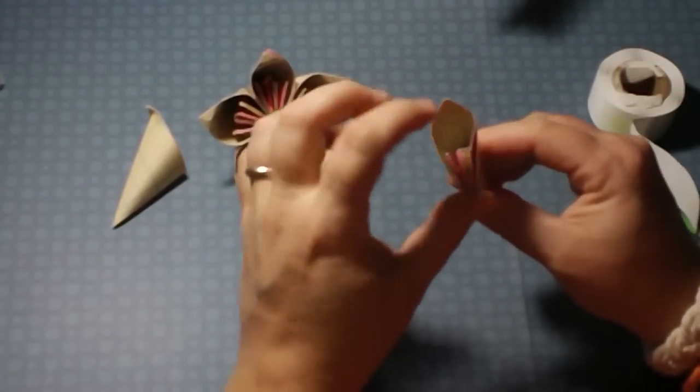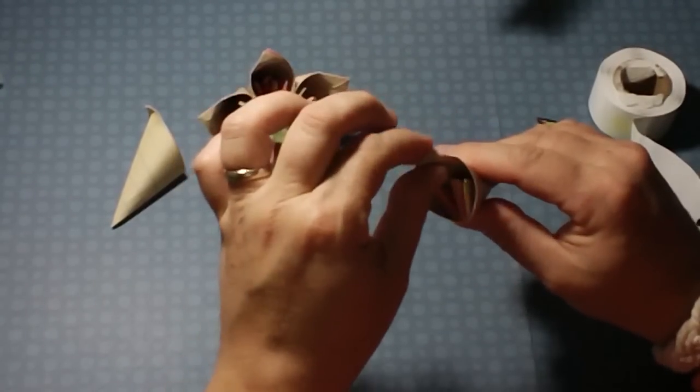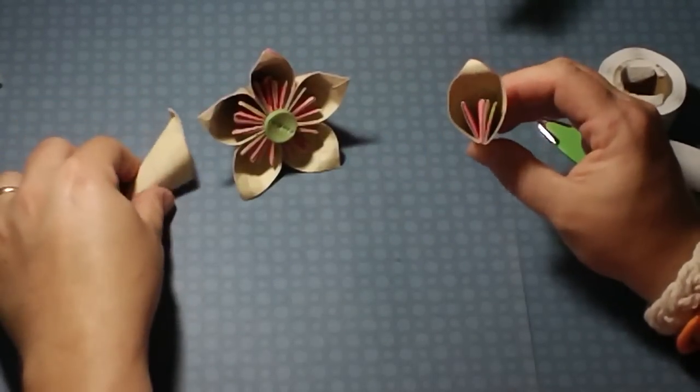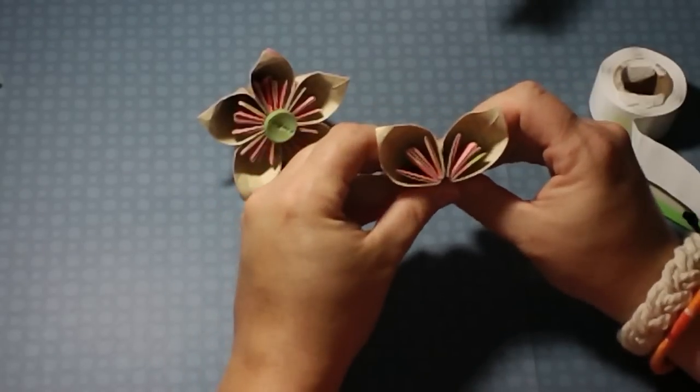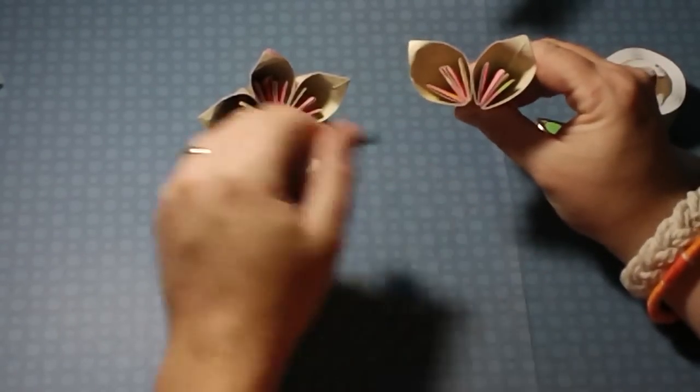Then I fluff it back out so it's nice and round, and I like to curl this petal up a little bit. So now we have two of them here and we're going to put those together just like that. You make three more and now you have five.